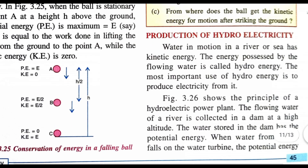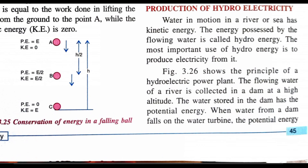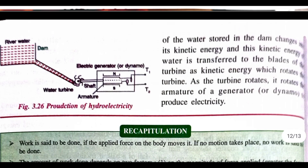The production of hydro-electrical energy: water in a river or the sea has kinetic energy. In Figure 3.26, a hydro-electrical power plant is shown. Water is stored at a high altitude behind a dam — when the gate is closed, there is potential energy. When the water is released from the dam, the potential energy is converted into kinetic energy. The flowing water rotates a turbine, and through the armature, the generator produces electricity.